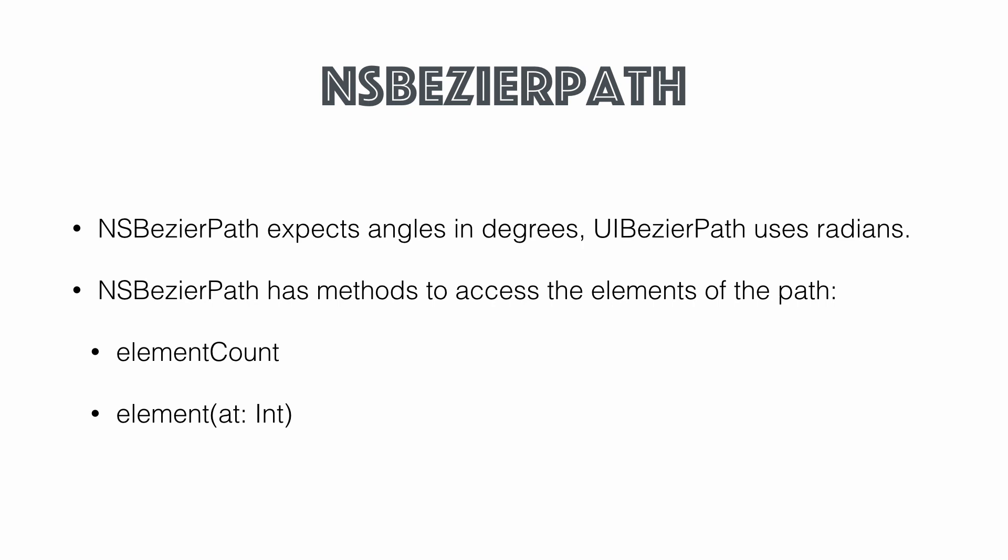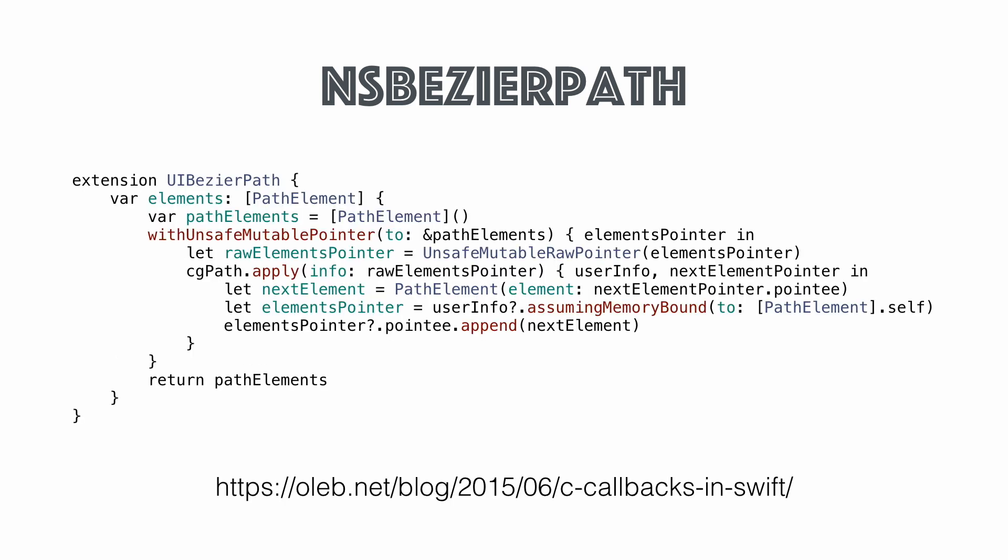Another thing NSBézierPath allows is accessing the elements of the path — you can get at individual elements — and they dropped that from UIBézierPath. UIBézierPath does implement NSCoding so it's easy to serialize and save to disk. I had an example where I needed to draw a curve and make it appear as if it's drawing in real time, so I needed to extract all the different subpaths and draw them one by one using a timer.